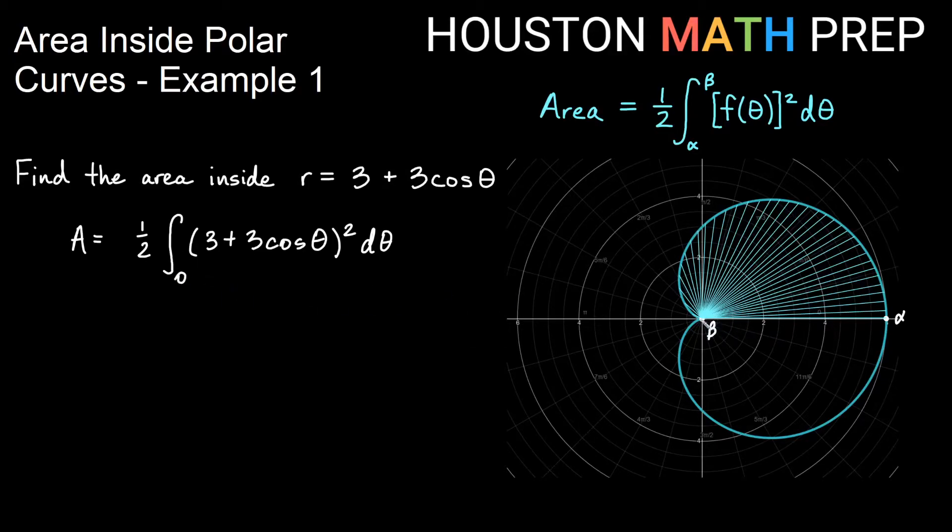Beta value, you can tell beta is where we are at the pole. Beta is going to be when r is equal to zero. So if I want to find beta, I could certainly set this equal to zero and solve. Let's go ahead and do that.